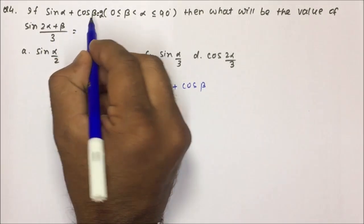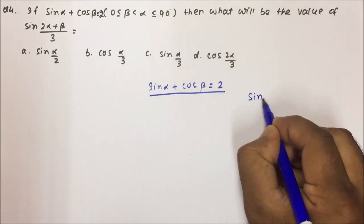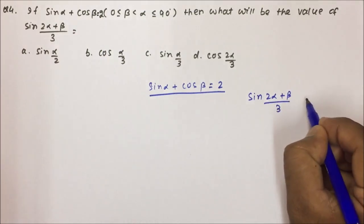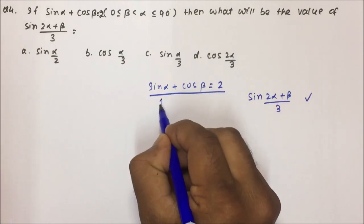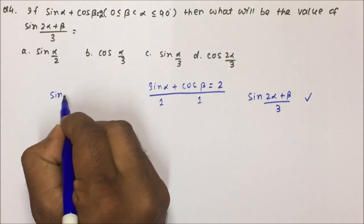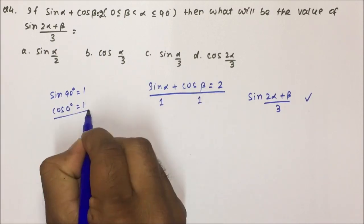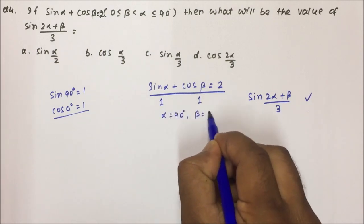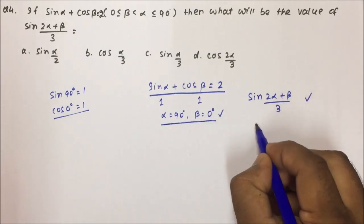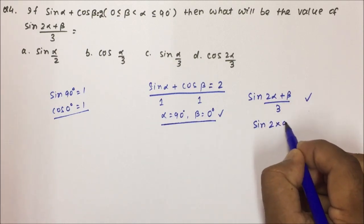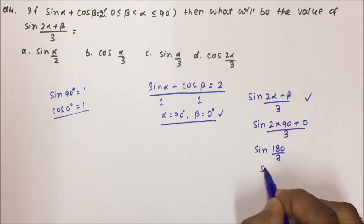Question number 4: if sin α + cos β = 2, find the value of sin(2α + β)/3. For this to equal 2, sin α must be 1 (so α = 90°) and cos β must be 1 (so β = 0°). Substituting: sin(2×90 + 0)/3 = sin(180/3) = sin 60° = √3/2.